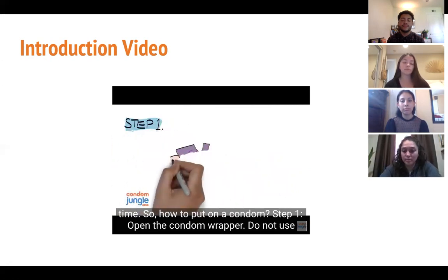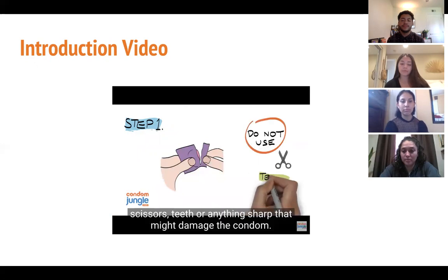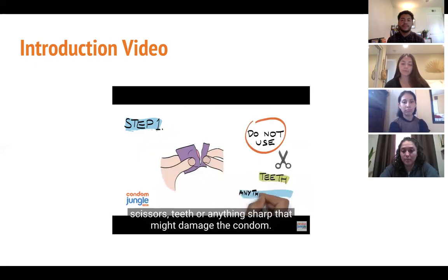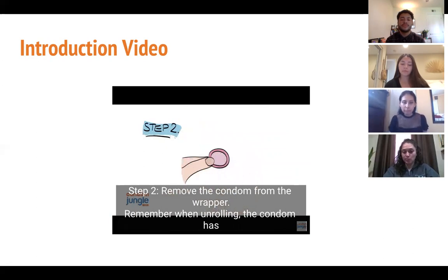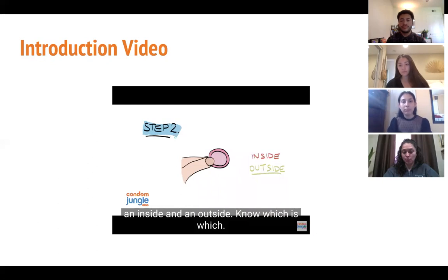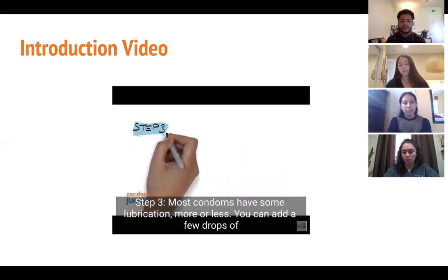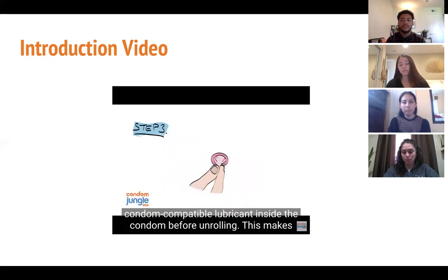Step one: open the condom wrapper. Do not use scissors, teeth, or anything sharp that might damage the condom. Step two: remove the condom from the wrapper. Remember, when unrolling, the condom has an inside and an outside — know which is which.